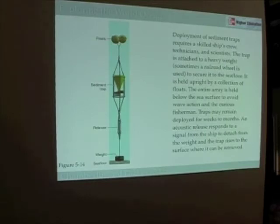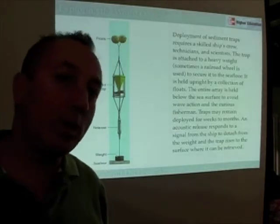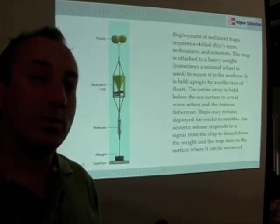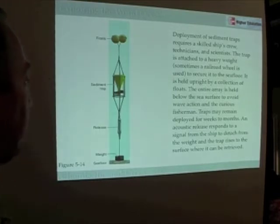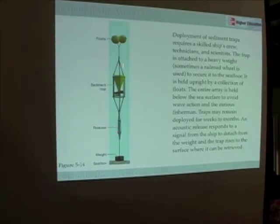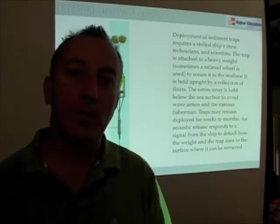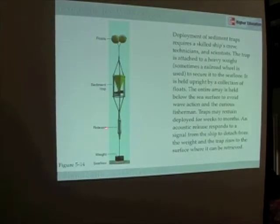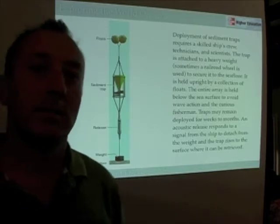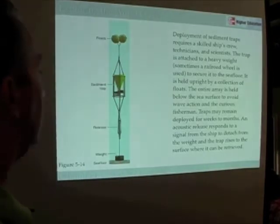Sediment traps are often attached to floats to hold them upright, and an anchor — oftentimes just a railroad wheel. To release the trap after it's done collecting samples, we use something called an acoustic release. We send a beep down to the sediment trap, the mechanism releases it, it floats to the top where it can be retrieved, and the weight stays on the seafloor until it's subducted.